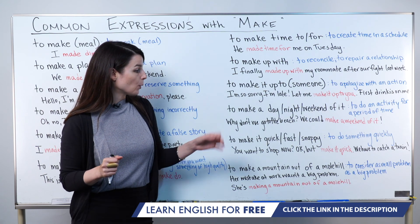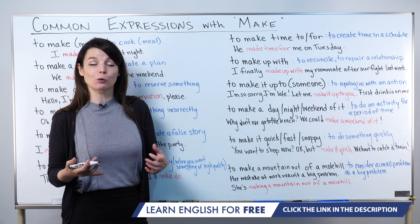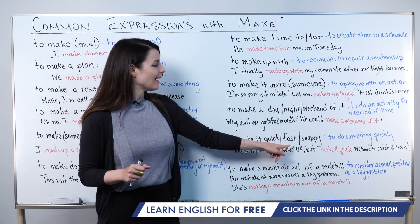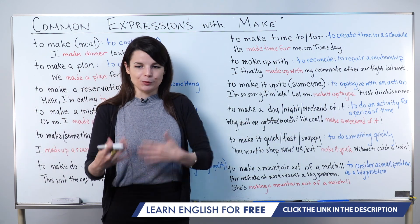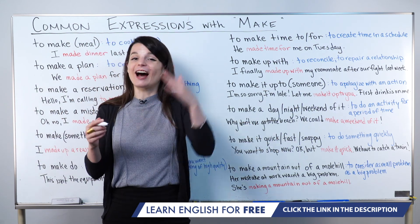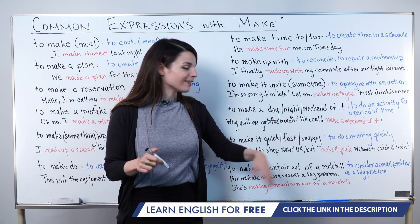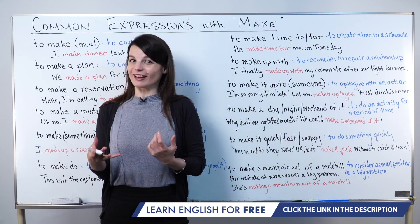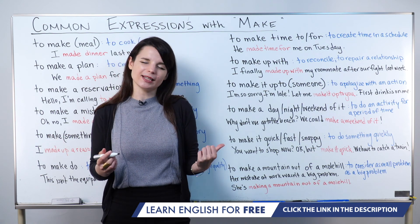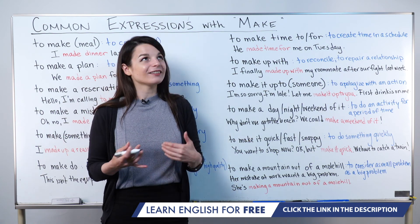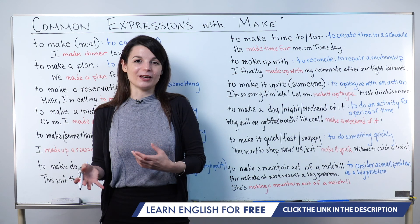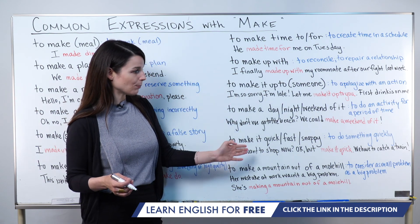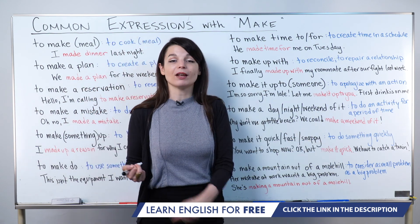The next expression is to make it quick, to make it fast, or to make it snappy. Quick and fast both mean to do something at high speed. Snappy is a casual, informal word meaning fast or quick — we use it mostly in this expression. So to make it quick, to make it fast, to make it snappy all mean to do something quickly.